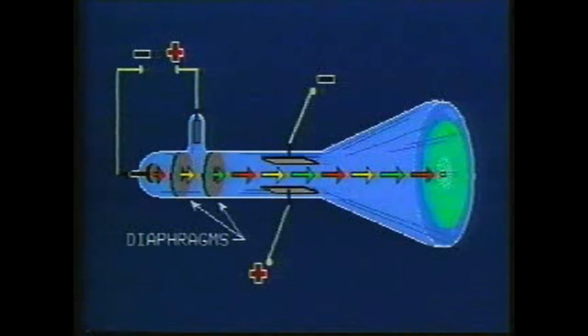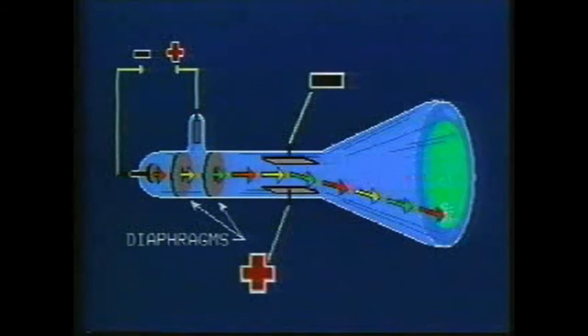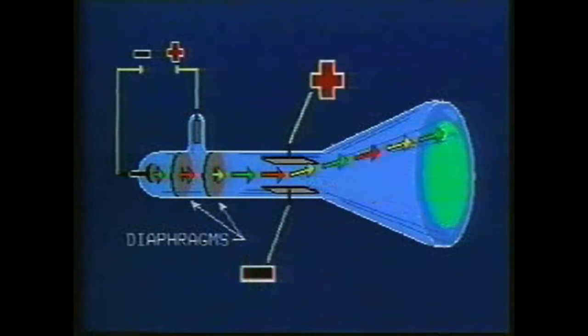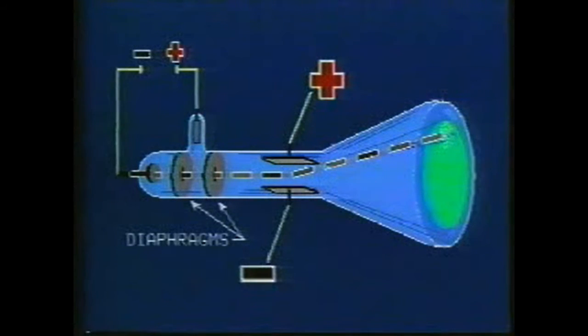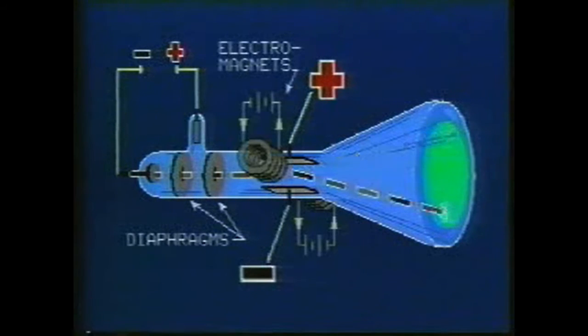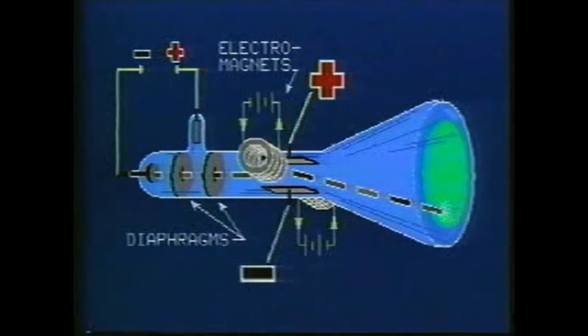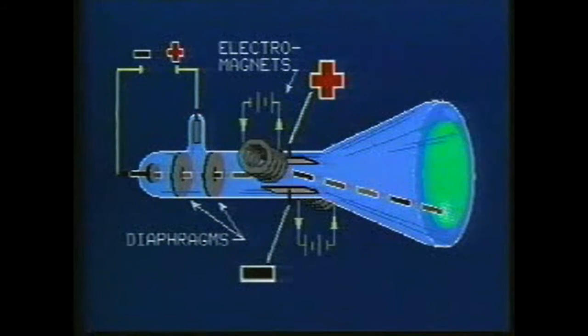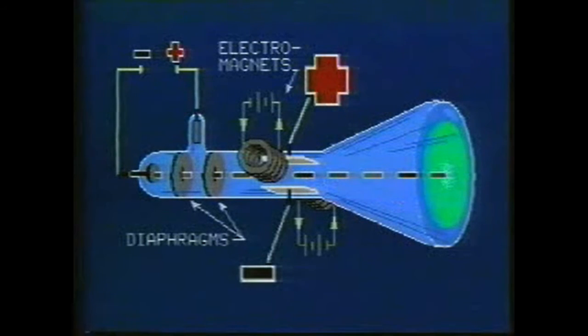Charged plates, either side of the tube, could deflect the cathode ray towards the positive plate, which persuaded Thompson that cathode rays consisted of negatively charged particles. Electromagnets could also bend the cathode rays. By balancing the deflection caused by the magnetic field with that caused by the electric field, he was able to calculate the charge to mass ratio of the particle.